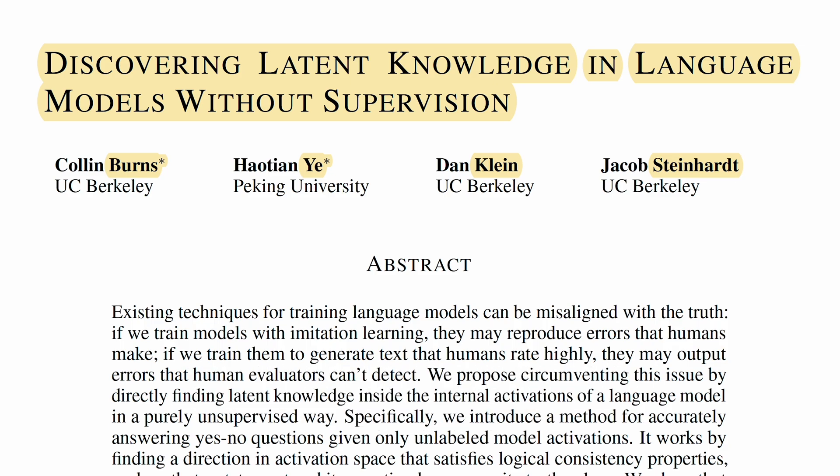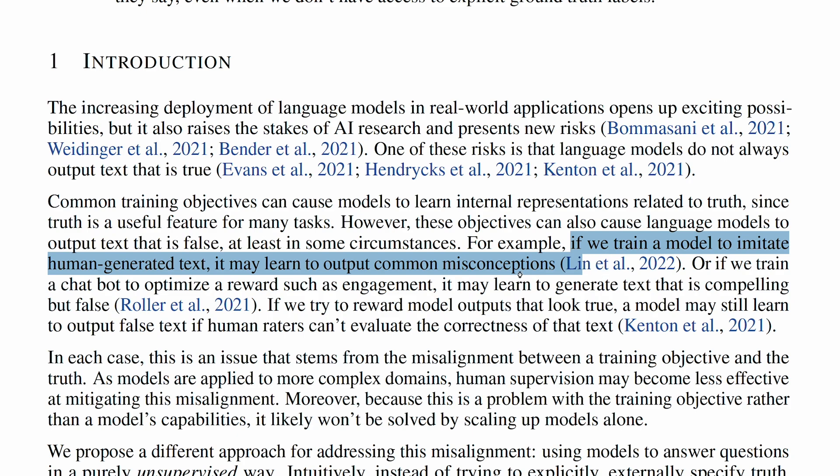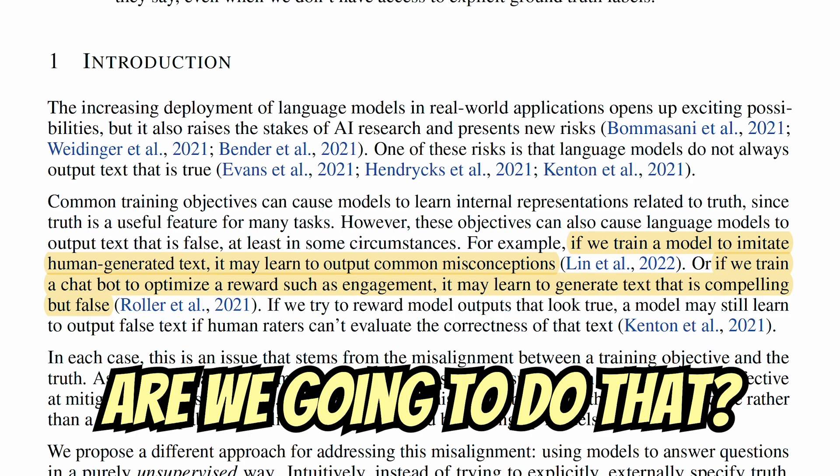But why? Well, first, if we train a model to imitate human-generated text, it may learn to output common misconceptions, even if it knows better. If we train a chatbot to optimize a reward such as engagement, it may learn to generate text that is compelling but false.